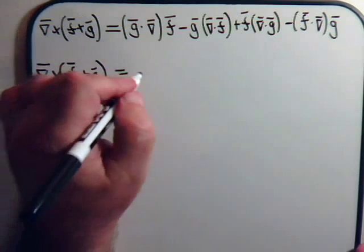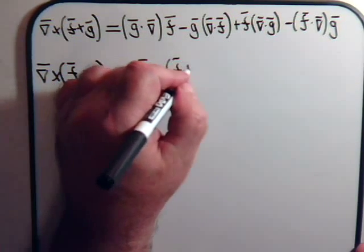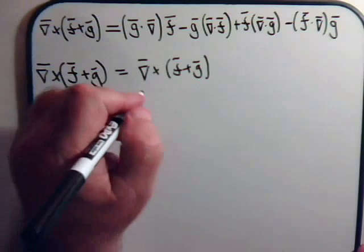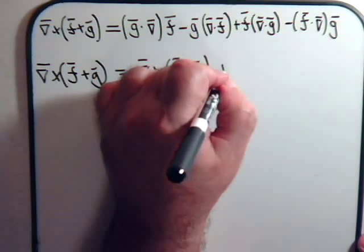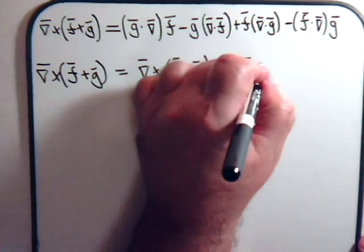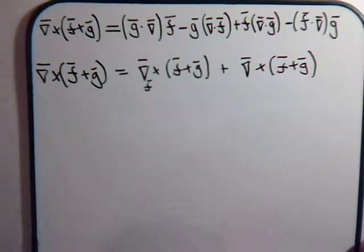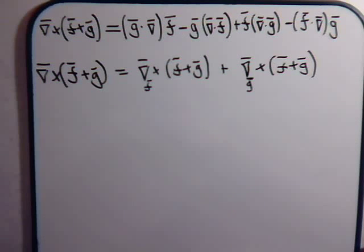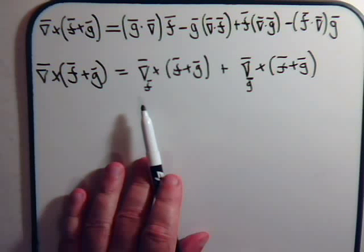This is equal to del cross (f cross g) where the del operator is operating only on vector f, and then we have plus del cross (f cross g) where del is operating now only on vector g. We didn't really derive this but we showed that this is indeed a valid approach in our example one and example two vector identities.